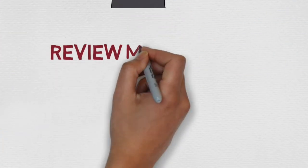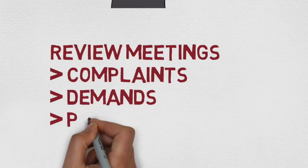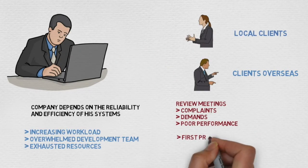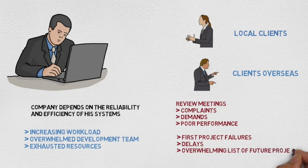Every review meeting in the past two weeks has been met with complaints and new demands due to poor performance on behalf of his team. John has begun to experience the first real project failures during his time as CIO, in addition to several project delays and an overwhelming list of future projects in his docket that his team does not feel capable of tackling.